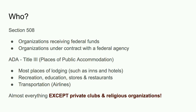The ADA, on the other hand, is broader — it includes most places of lodging, recreation, sports, education, stores, restaurants, and transportation. There's a new bill about airline transportation trying to support more accessible airline travel, including a part looking at airline websites to make sure people with disabilities can effectively book flights. Airline websites have been particularly bad for accessibility. The ADA basically includes almost every organization except private clubs and religious organizations.